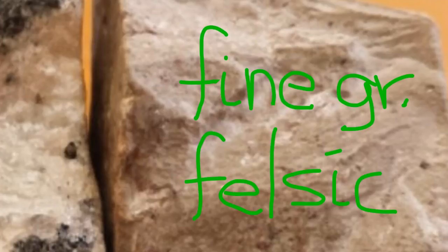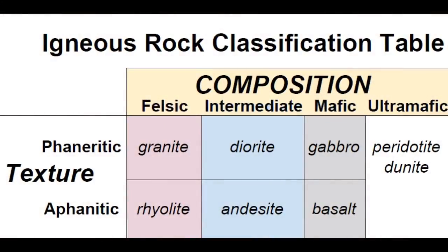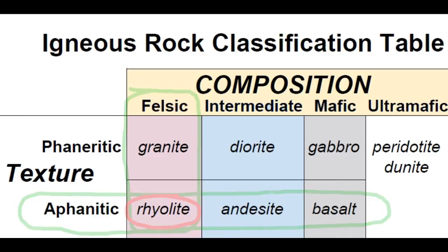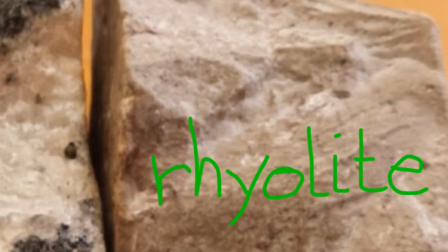However, the lighter tone of the rock does confirm that it is composed of material of felsic composition. In the igneous rock classification table, we find that an aphanitic, or fine-grained, rock of felsic composition is named rhyolite. Rhyolite is a felsic, aphanitic igneous rock.